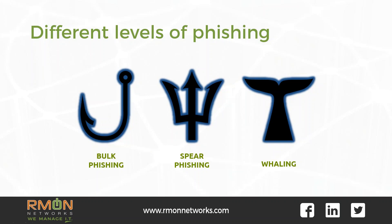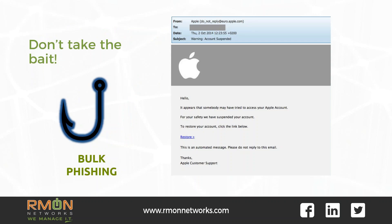Today we're going to cover the differences between phishing emails. Did you know there were three different types? Generic phishing or bulk phishing, spear phishing, and the most targeted level of phishing, also known as whaling. All three types are designed to target people because historically it's been easier for hackers to break into computer networks through people and not security technology.